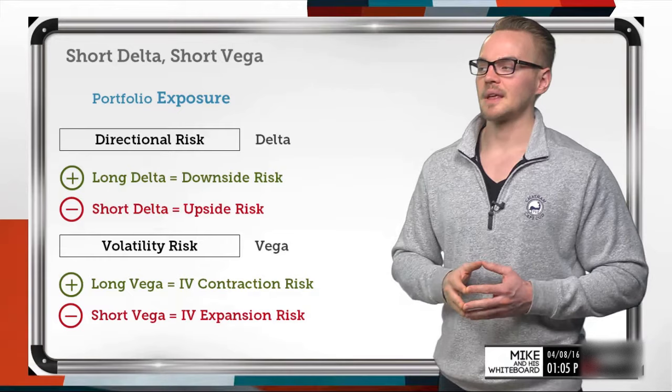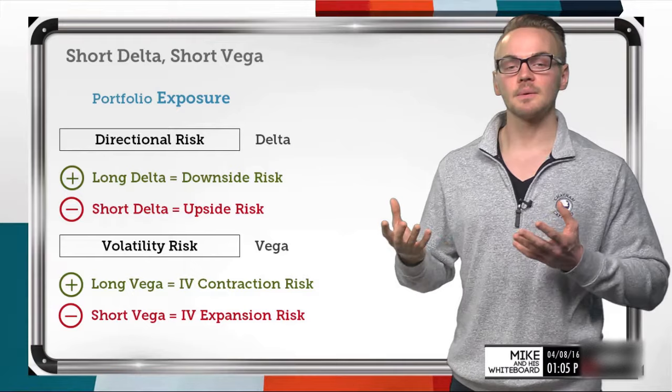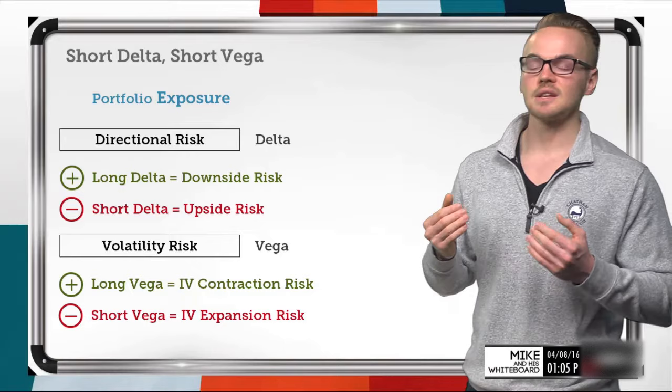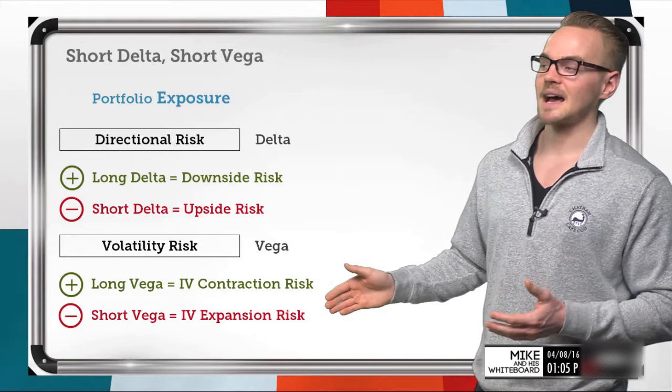If I'm short vega, I want the opposite of the long vega example — I want an IV contraction to happen because that makes my position more profitable. If I have short vega and a one percent decrease in implied volatility happens, that's going to be beneficial for me. Knowing that a contraction is beneficial means that my risk would be if there is an IV expansion.